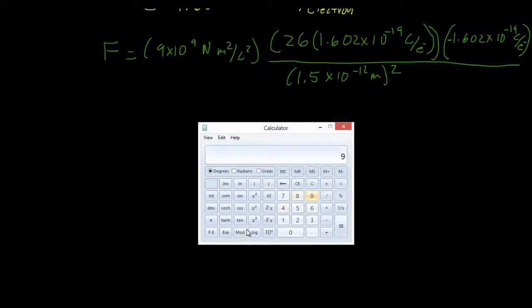So we'll take 9 exponent of 9 times 26 times 1.602, exponent of negative 19, times 1.602, and that's negative, with an exponent of negative 19. And we'll divide by 1.5, with an exponent of negative 12, squared.